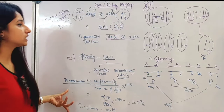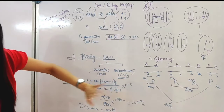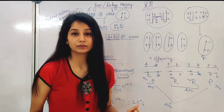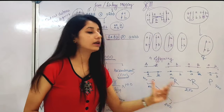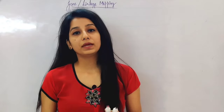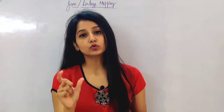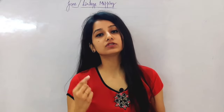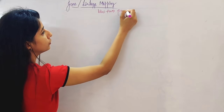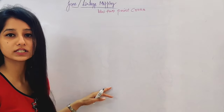For this particular answer, we didn't need to draw all the charts since the numbers were given directly. But in exam questions, different types of questions will come where we will need to work through it fully. What we just saw was gene mapping between two genes — we call this a two-point cross, or two-locus cross.